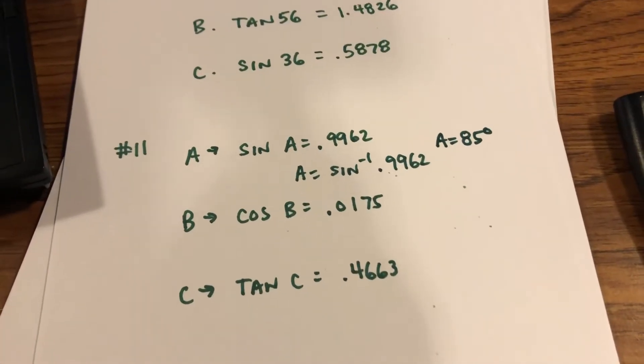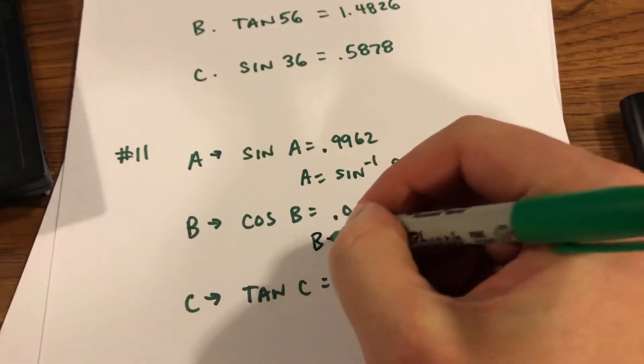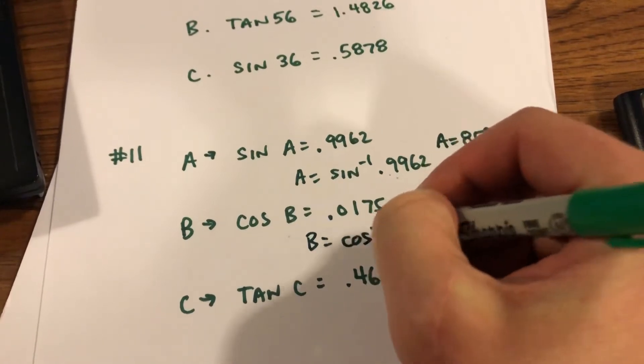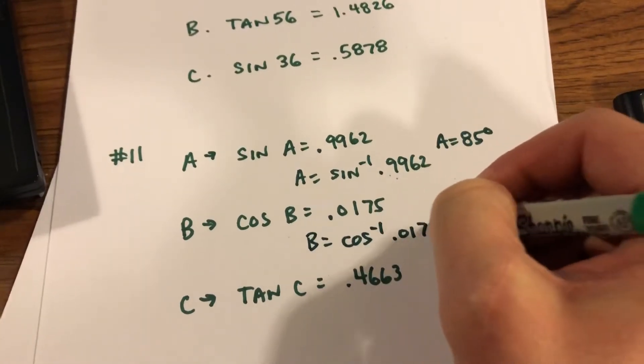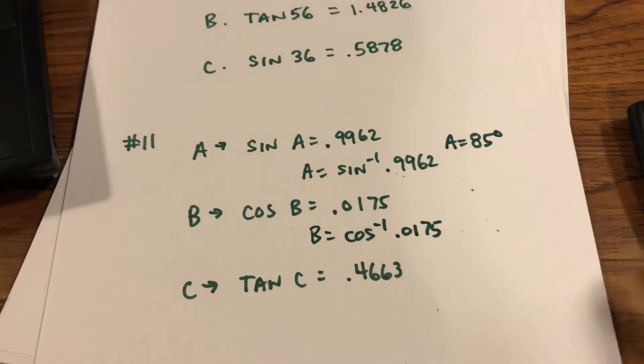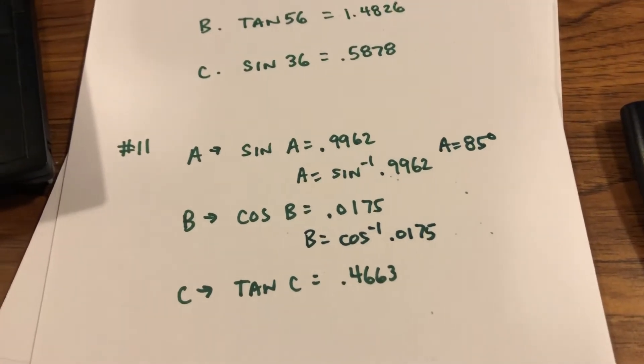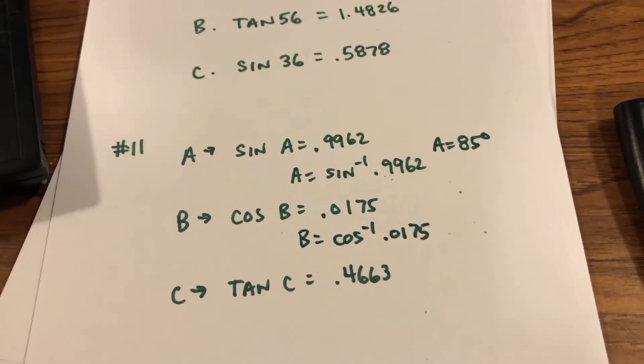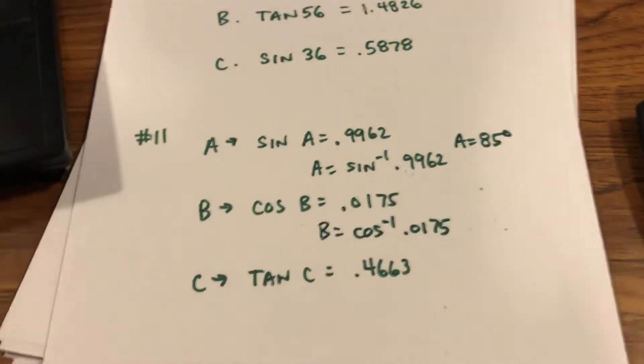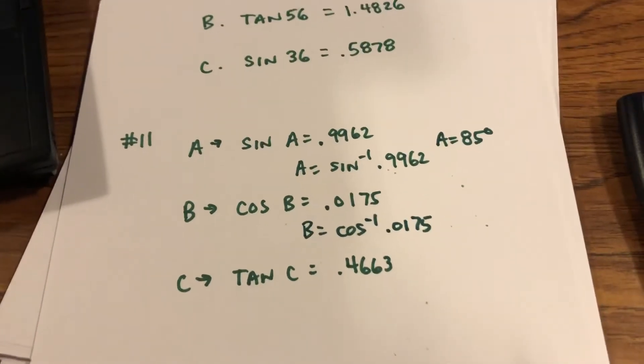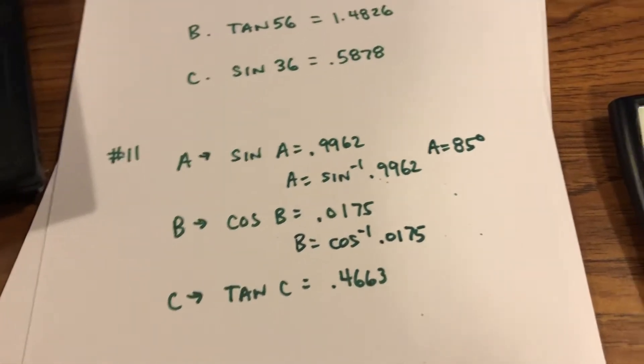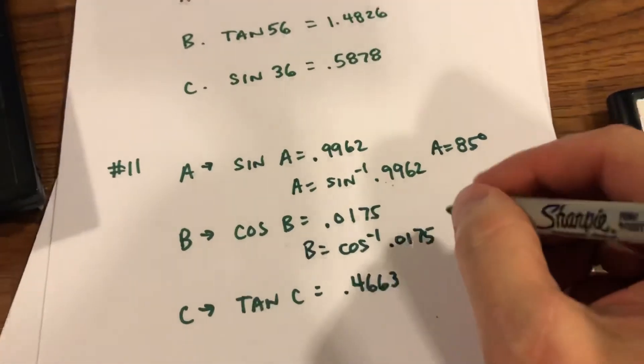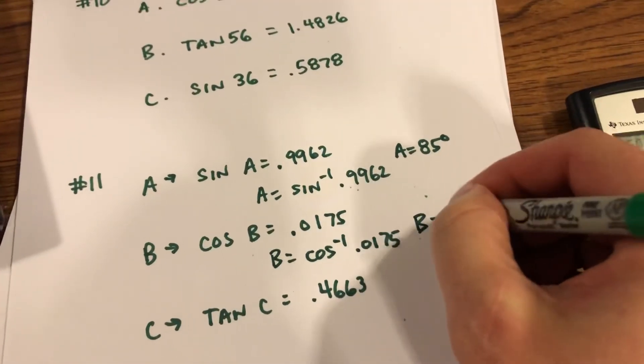In letter B, again, to find B, we're going to do the inverse cosine of 0.0175. So again, calculator problems, second function cosine 0.0175, and then hit enter. It gets me 88.99, which means I'm going to round it up to simply 89 degrees.